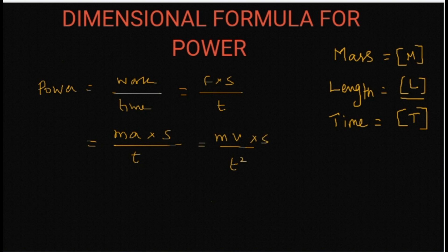If I break it further, velocity is equal to displacement over time. So m into s by t cubed into s. This will be equal to mass into distance squared by time cubed.